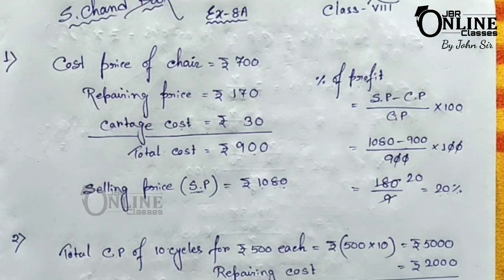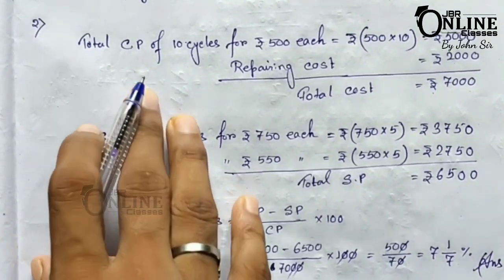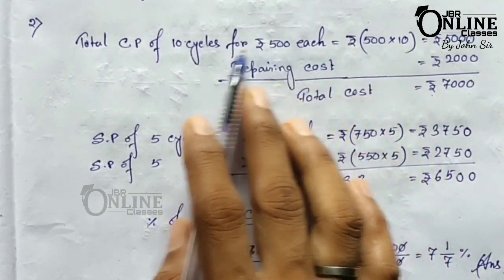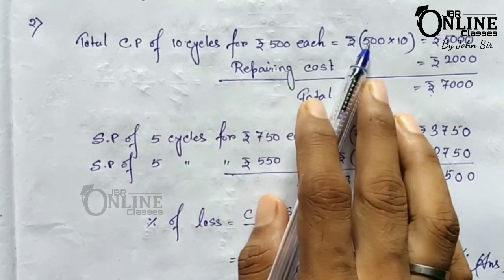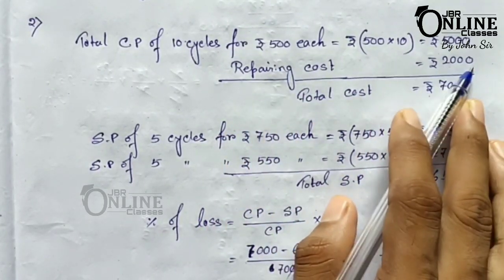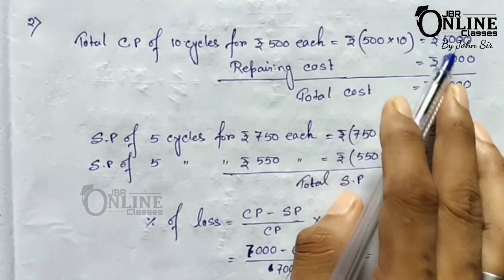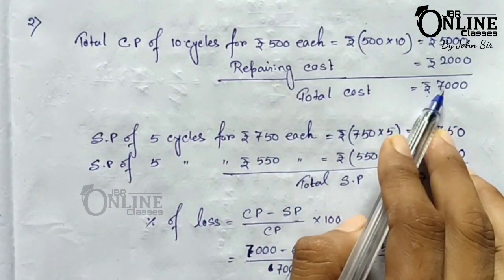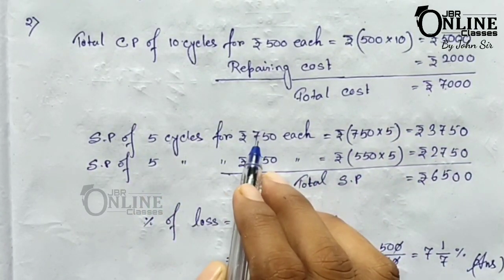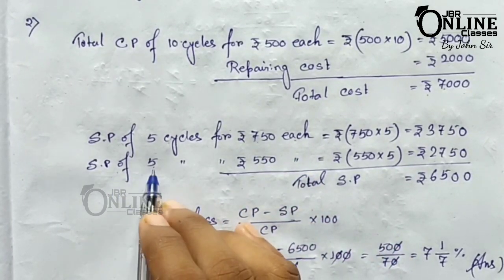In problem number two, Romes bought 10 cycles for rupees 500 each, so the price of 10 cycles equals 500 × 10 = rupees 5000. The repairing cost equals rupees 2000, so the total cost of 10 cycles equals 5000 + 2000 = rupees 7000. He then sold five of them at rupees 750 each and the remaining five at a different price.